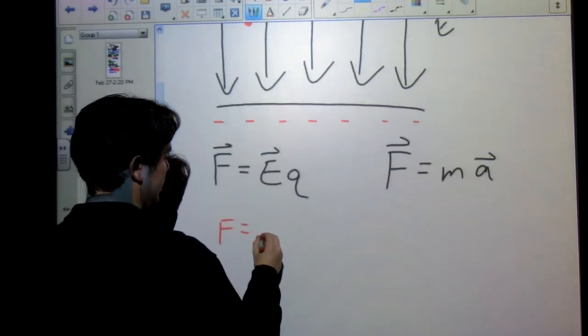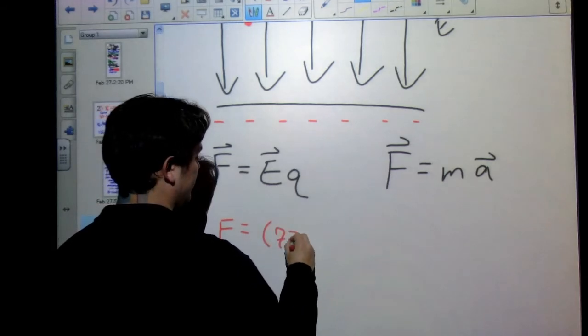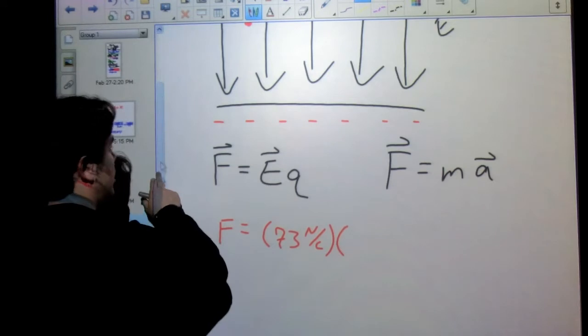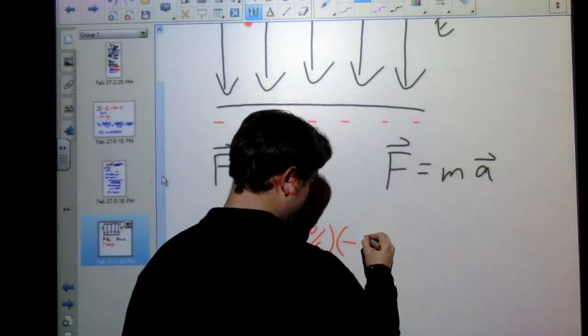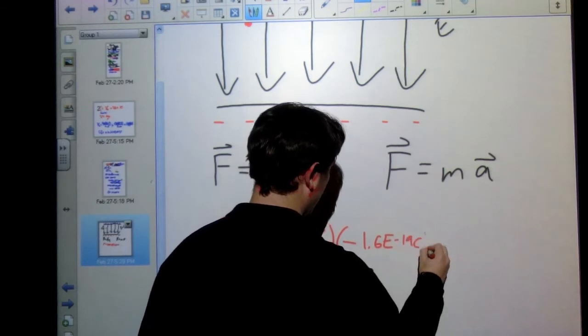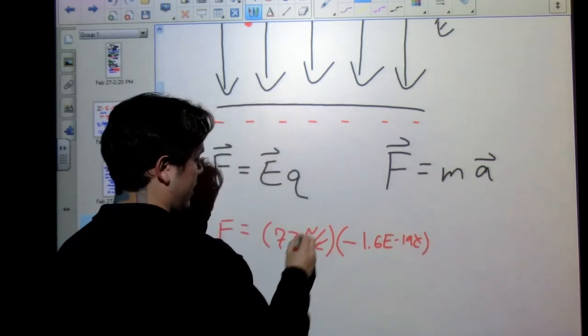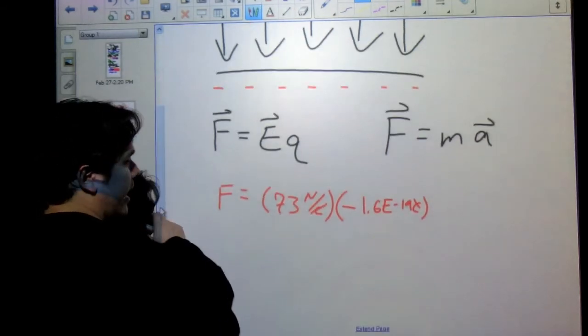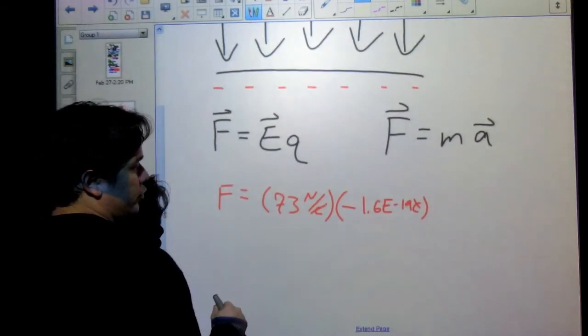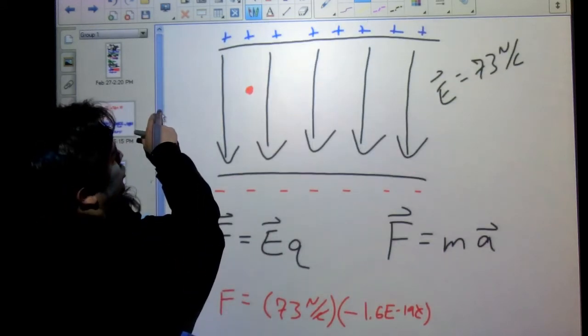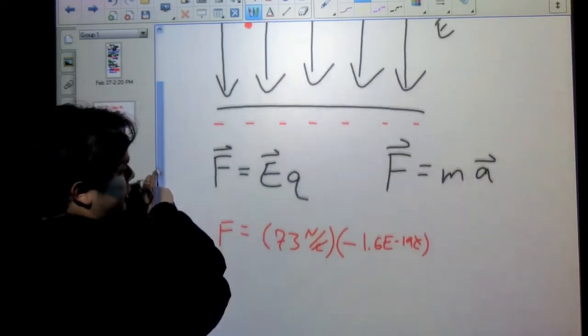So we're going to be able to set these equal to one another. I'm going to find my force - it's going to be my electric field times my charge. My force will be equal to my electric field, which was 73 newtons per coulomb, times my charge. It's an electron, so we're going to do negative 1.6 times 10 to the negative 19 coulombs.